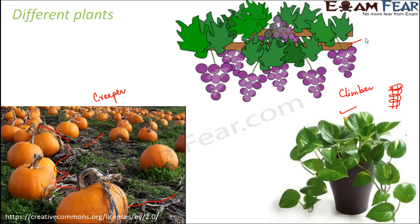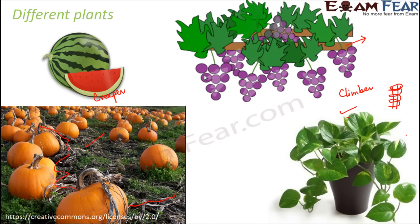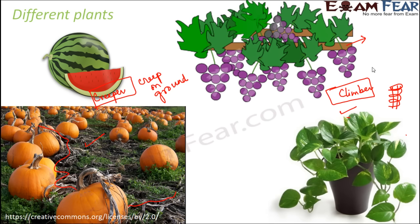Another example of a climber could be a grapevine. You can see the brown-colored structure is a rod and the grapevine is climbing over it. Watermelon is again an example of a creeper — watermelons and pumpkins creep on the ground. Climbers, on the other hand, climb on some solid support.